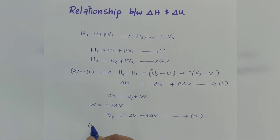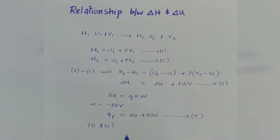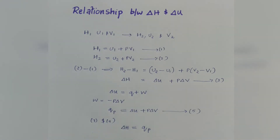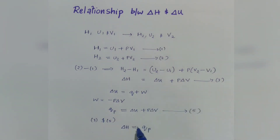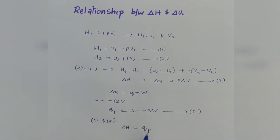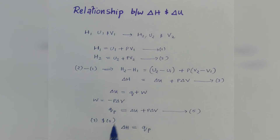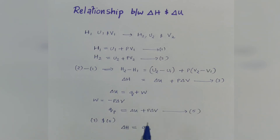From equations 3 and 5, we can write that delta H is equal to QP. That is, for a process involving no work other than expansion work, the enthalpy change is equal to the heat added at constant pressure.